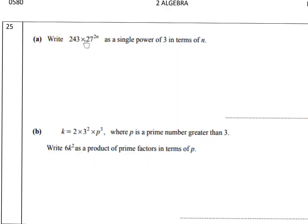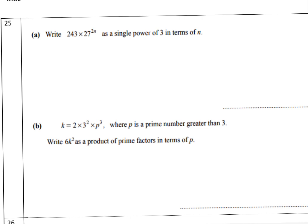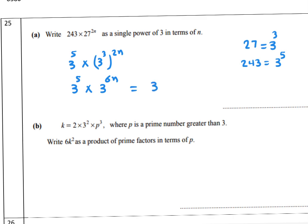Problem 25: write 243 times 27^(2n) as a single power of 3. 27 = 3^3 and 243 = 3^5. Rewrite: 3^5 times (3^3)^(2n) = 3^5 times 3^(6n). Add the powers: the answer is 3^(5 + 6n).